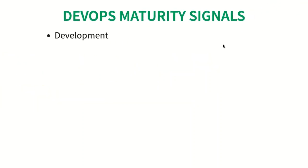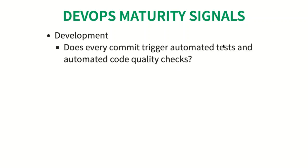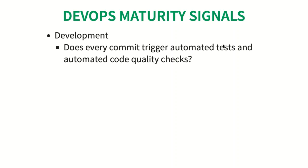Let's start with the maturity signals at the development phase. At the development stage, we start by asking: does every commit trigger automation tests and automated code quality checks? This is a very important signal. Having continuous integration is very important. The second question is: is your code continuously delivered to production?